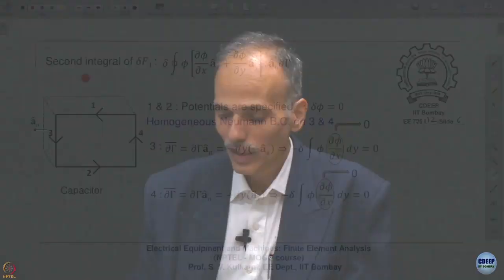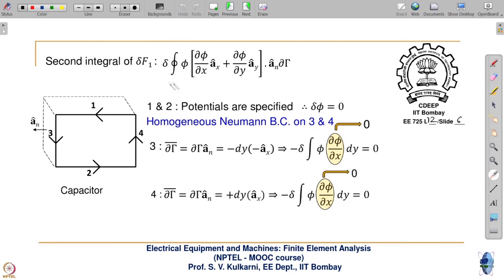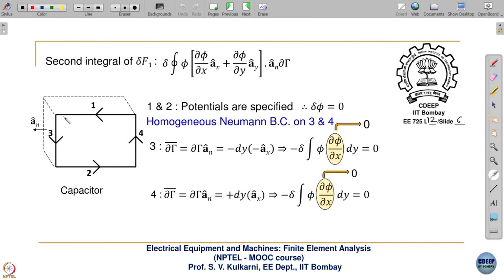For a parallel plate capacitor geometry — potential specified on segments 1 and 2, and homogeneous Neumann boundary conditions on vertical segments 3 and 4 — the closed contour is made up of these four segments. On segments 1 and 2, potentials are specified, so δφ = 0 because there is no variation; we are not varying φ there.